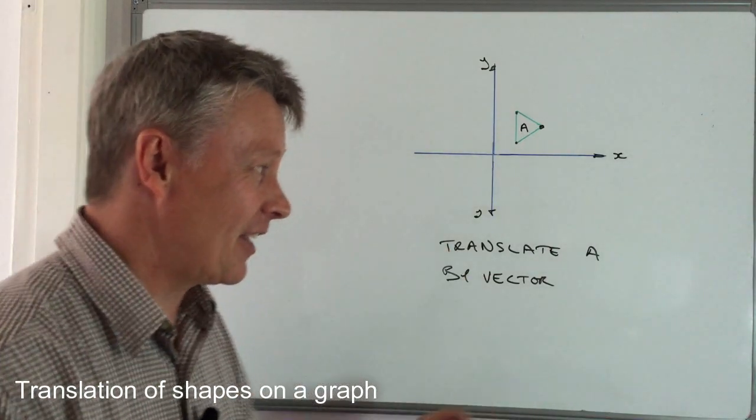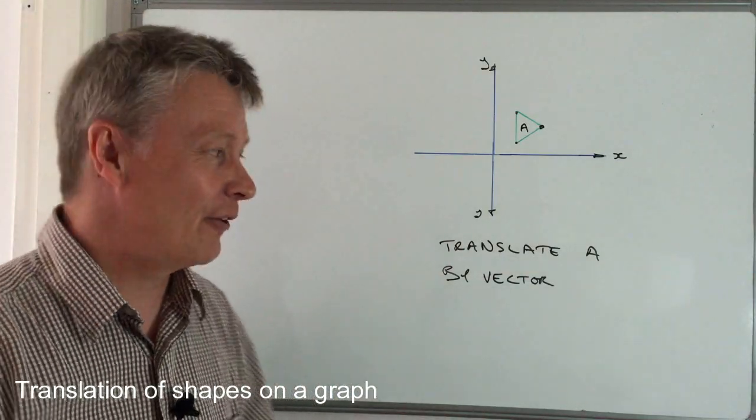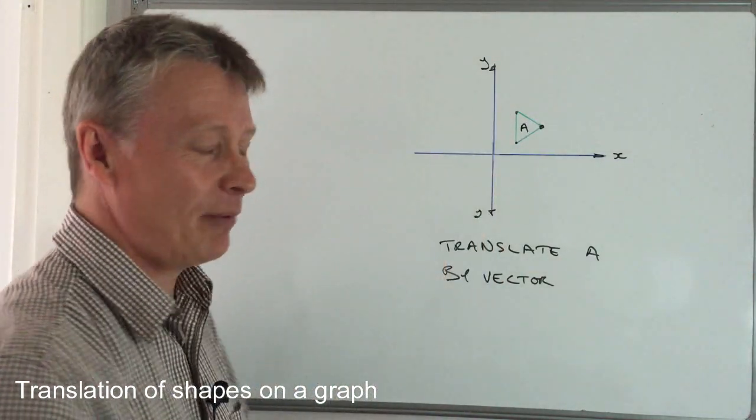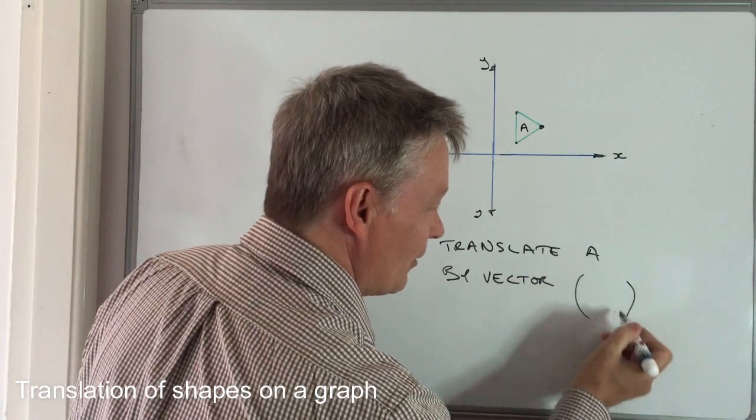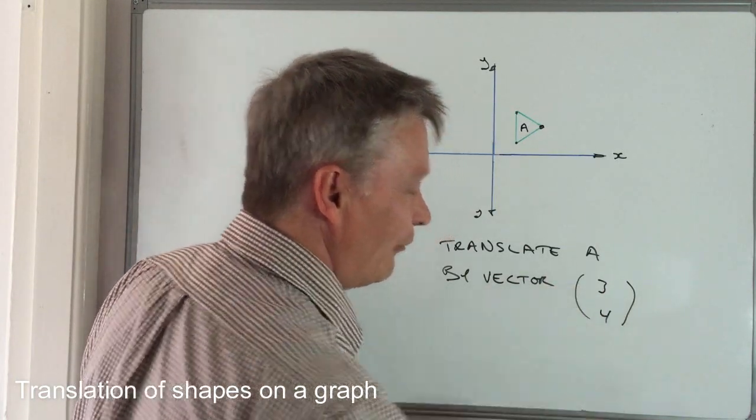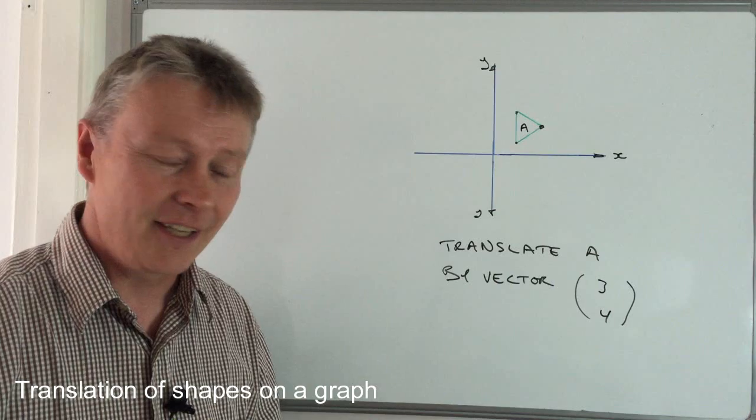This is the second video. In the first video, I talked about translating shape A and we used a vector which was (3, 4), which indicates that we move it three units along the x-axis and four units up.